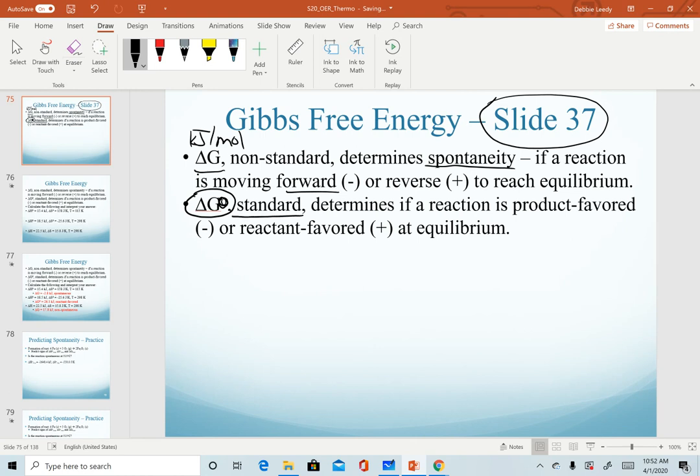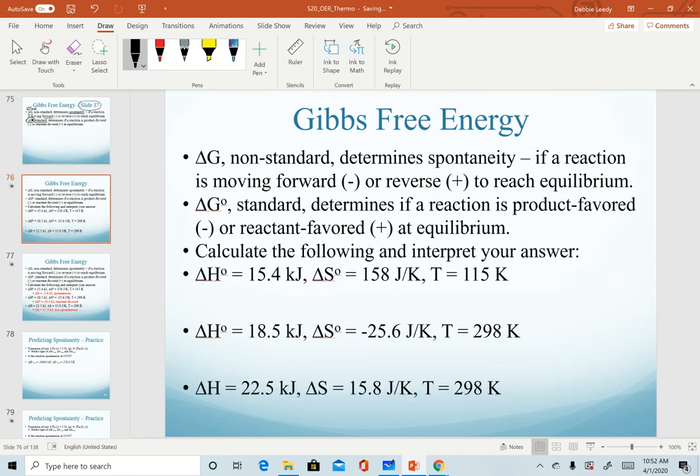The standard quantity, delta G naught, determines whether a reaction is product-favored or reactant-favored at equilibrium. In the next video or two, we'll get into more detail, but just wanted to define those. As you are asked to calculate Gibbs free energy, it's important for you to recognize whether you're calculating standard or non-standard delta G.